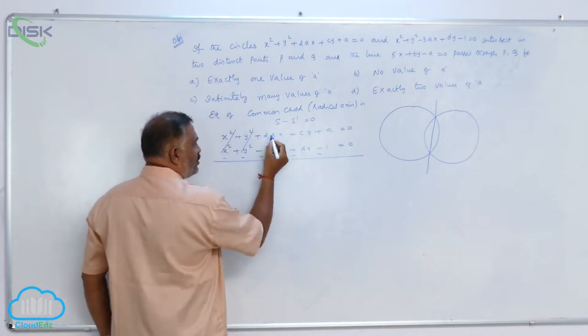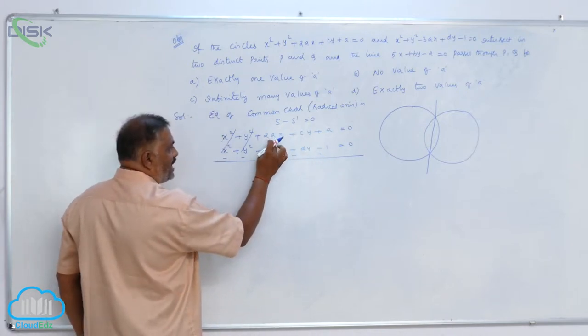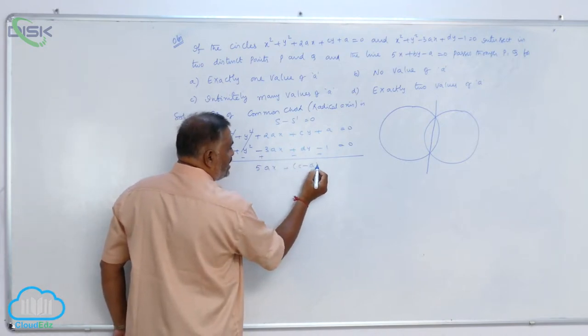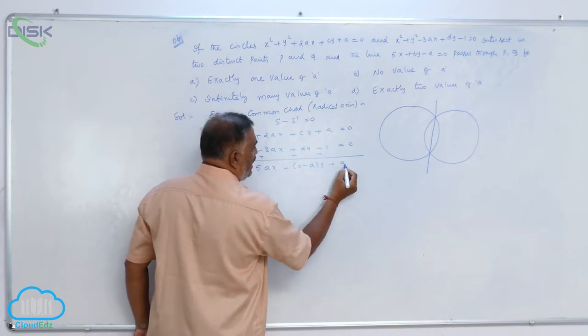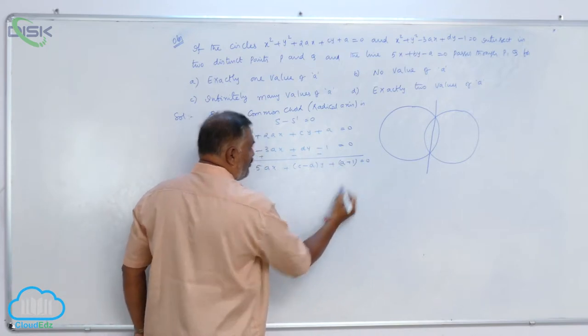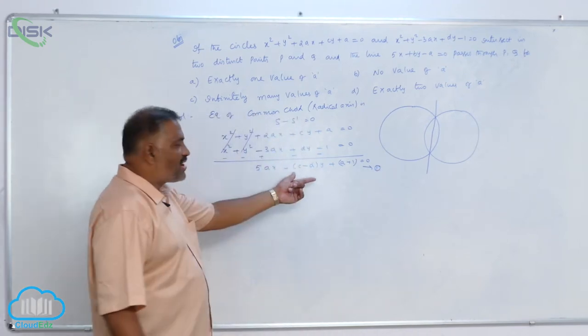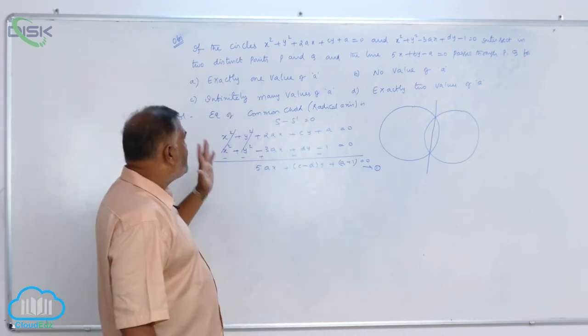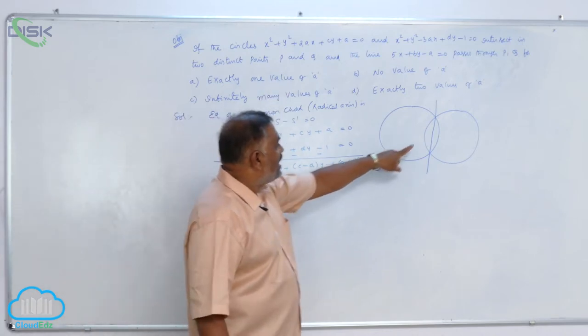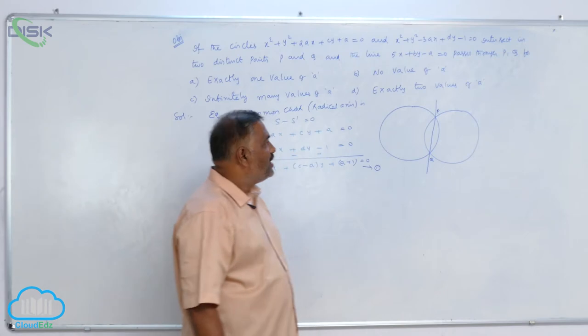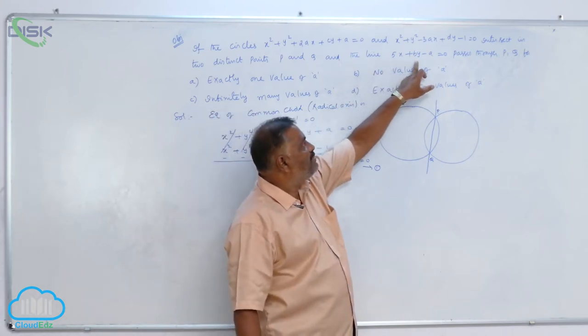Now take the subtraction: cancel, cancel, minus minus plus, minus plus. This will become 2ax plus 3ax is 5ax plus (c minus d)y plus a plus 1 equals zero. Call it equation one. This is nothing but the radical axis.